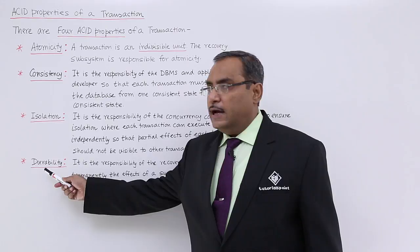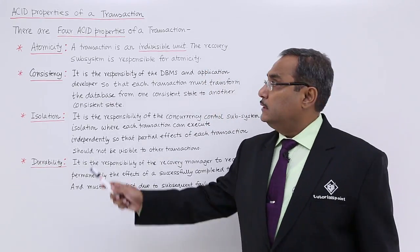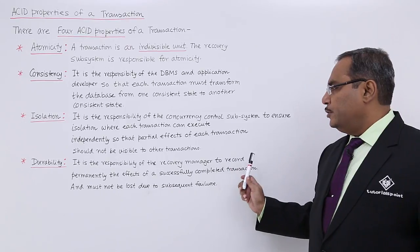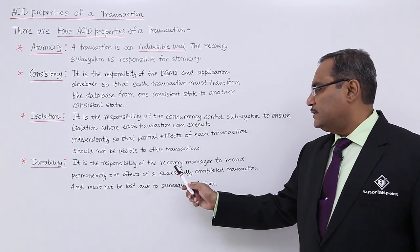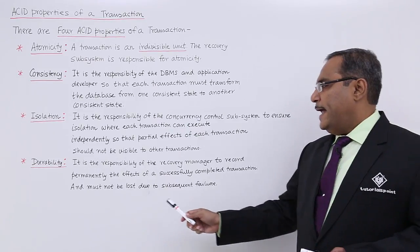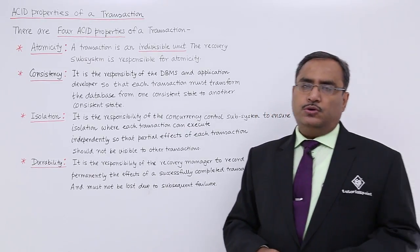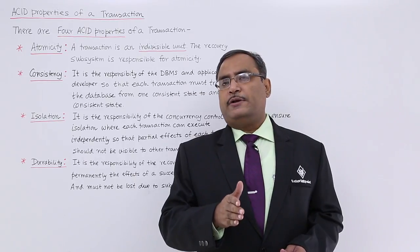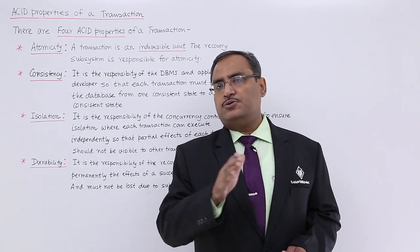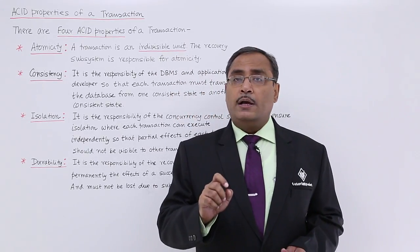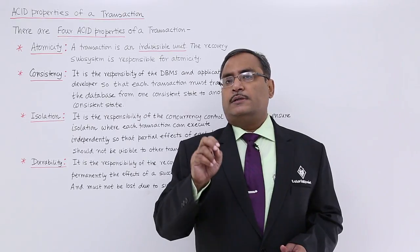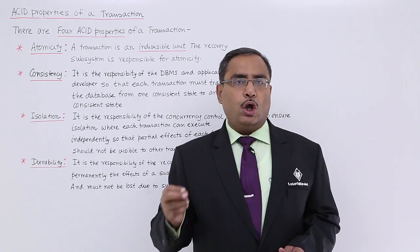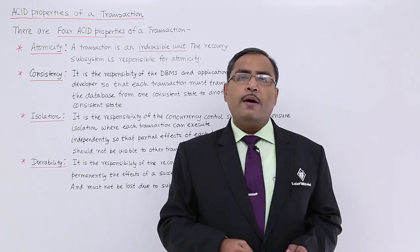The last property in the ACID property set is durability — the last letter D. It is the responsibility of the recovery manager to record permanently the effects of a successfully completed transaction, and those effects must not be lost due to subsequent failures. Whatever transactions are taking place, transitioning the database from one consistent state to another, the transaction should have a durable, permanent effect onto the database. Subsequent failure should not make the transaction's effect lost from the database.